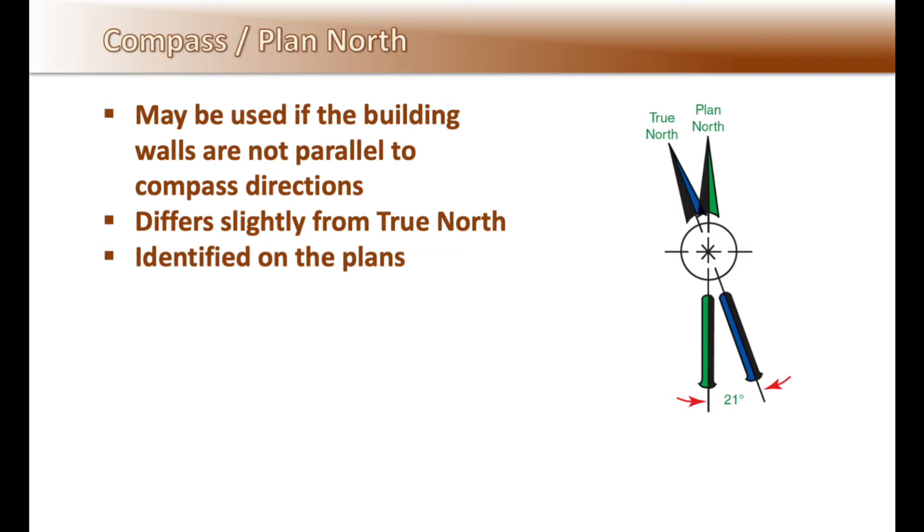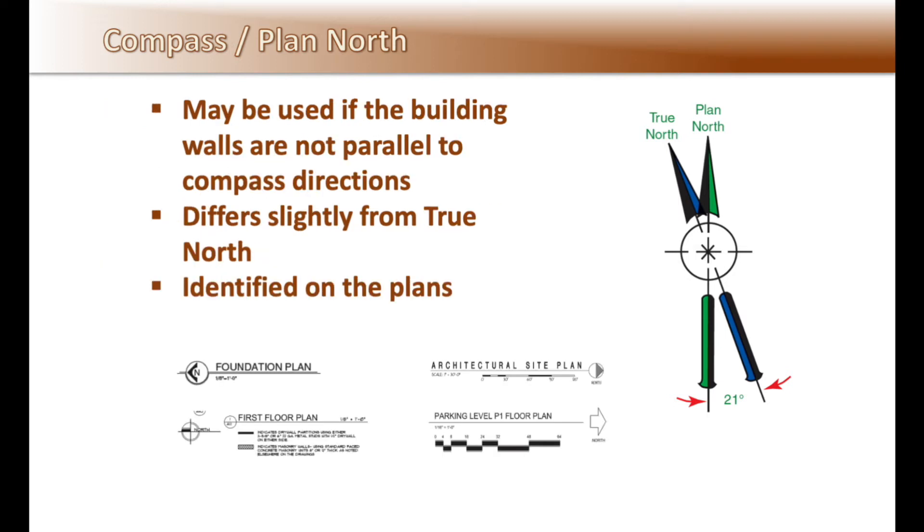Most site plans that have structures located on them will also indicate a plan north arrow which will be used to indicate building elevations and plan orientation to the compass on the construction documents. If the walls of the building are not parallel to the compass directions, a plan north will be designated. The plan north will typically be slightly different than true north. Plan north is usually indicated in or near the title of the plan and indicated on the building elevations. Here in these title blocks, you can see the plan north is either to the right or the left.